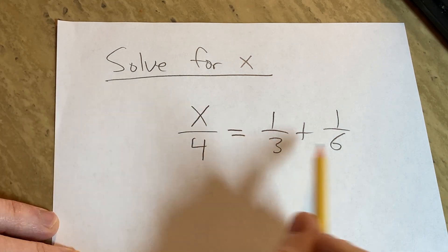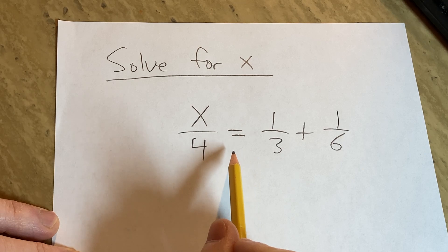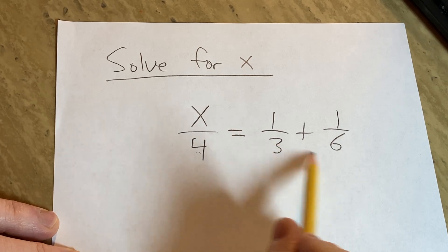So the first thing we should do is get rid of all of these fractions. We can multiply by a number to get rid of all of them. I'm thinking 12 because that will basically eliminate everything.